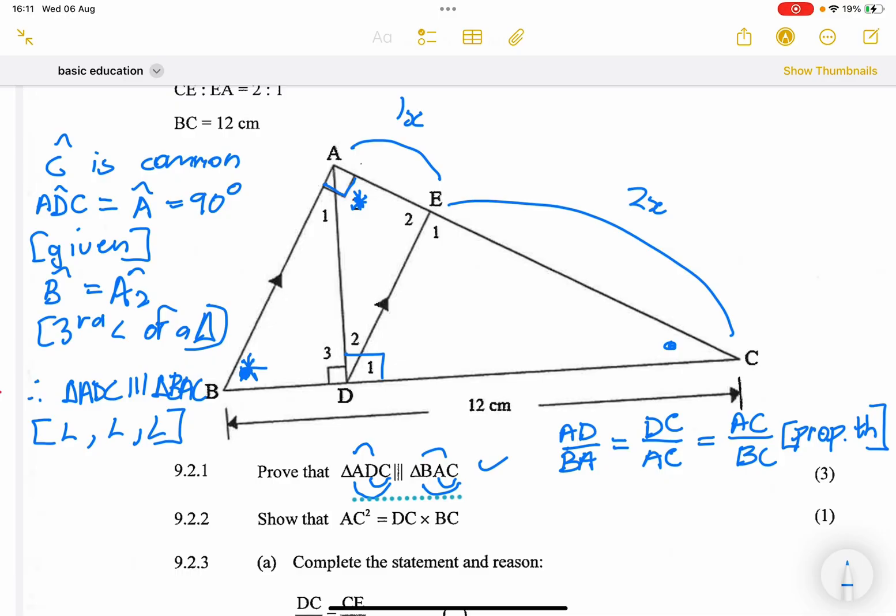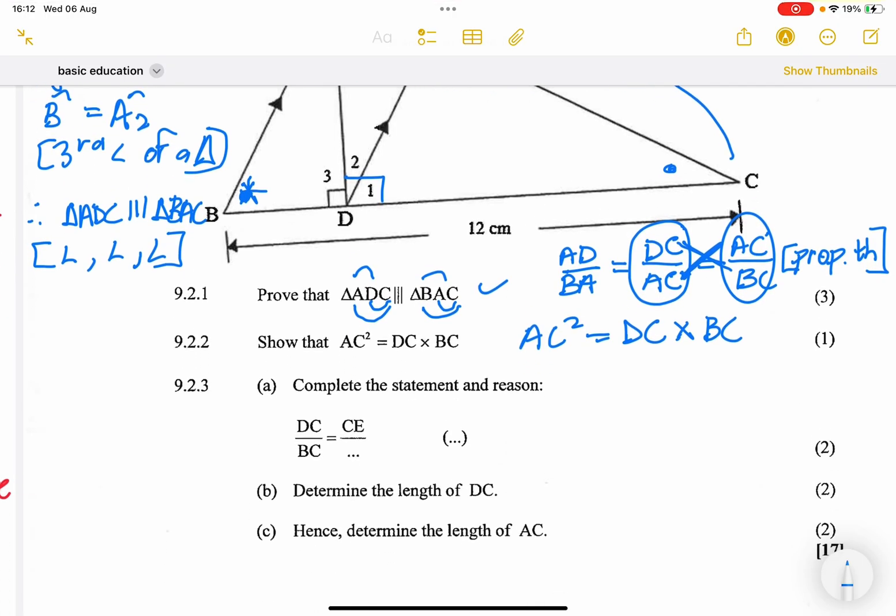So now we're looking to prove that AC squared. Now we're looking for AC. So there's AC there. So I'm going to take this ratio. So there's another AC. So I'm going to take that ratio. And what I'm going to do is cross multiply them. So in this case, AC multiplied by AC, that will give me AC squared. And that would be equal to DC multiplied by BC. And that is how the cookie crumbles. We've proven it.